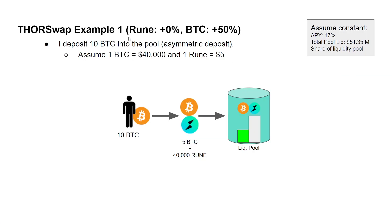For the first example: I deposit into a liquidity pool where the RUNE token's price doesn't change, but Bitcoin increases 50%. I assume APY is constant at 17%, total pool liquidity is $51 million and constant, and my share of the pool is also constant. Let's assume I deposit 10 Bitcoin as an asymmetric deposit, where one Bitcoin equals $40,000 and one RUNE token equals $5.